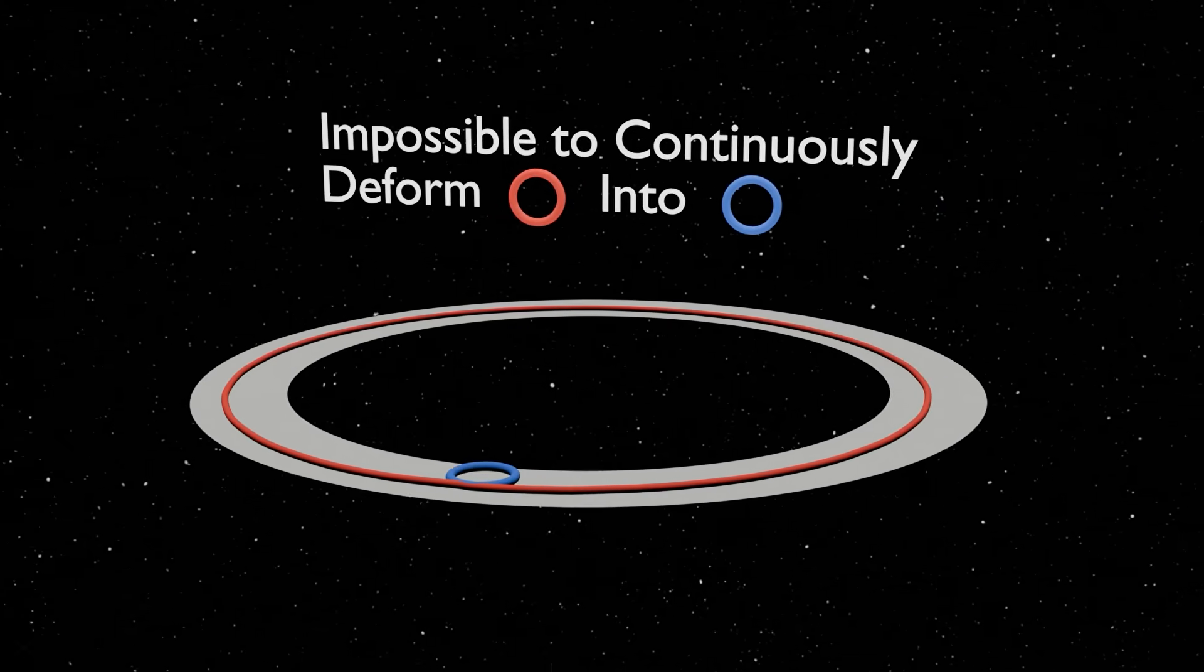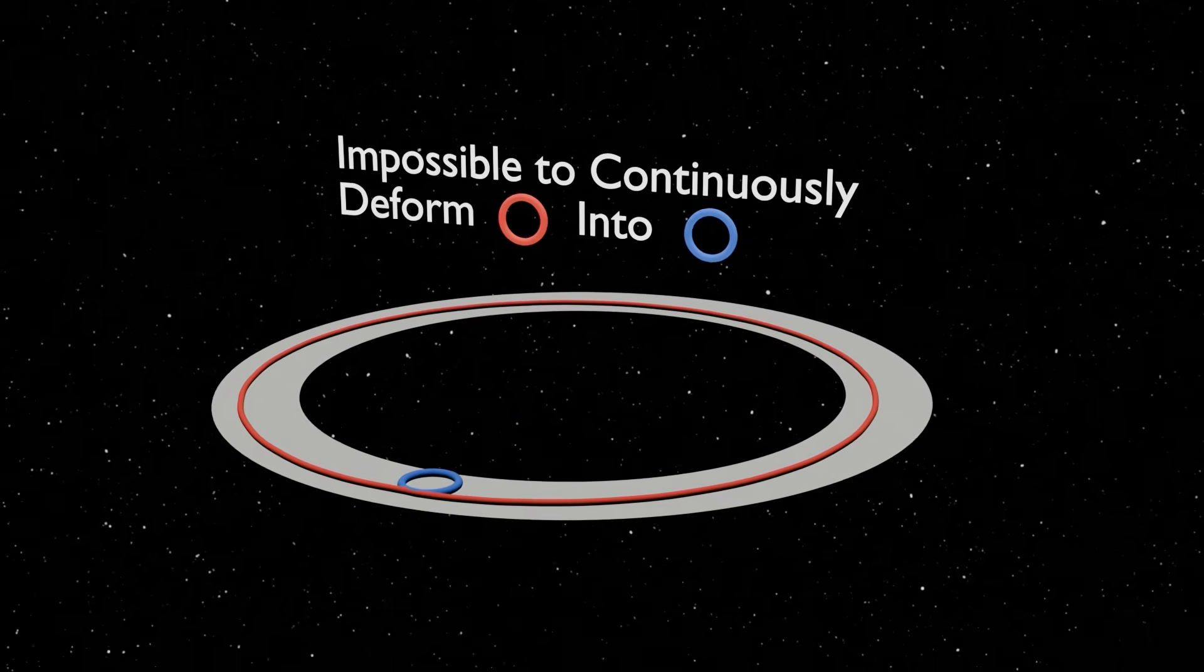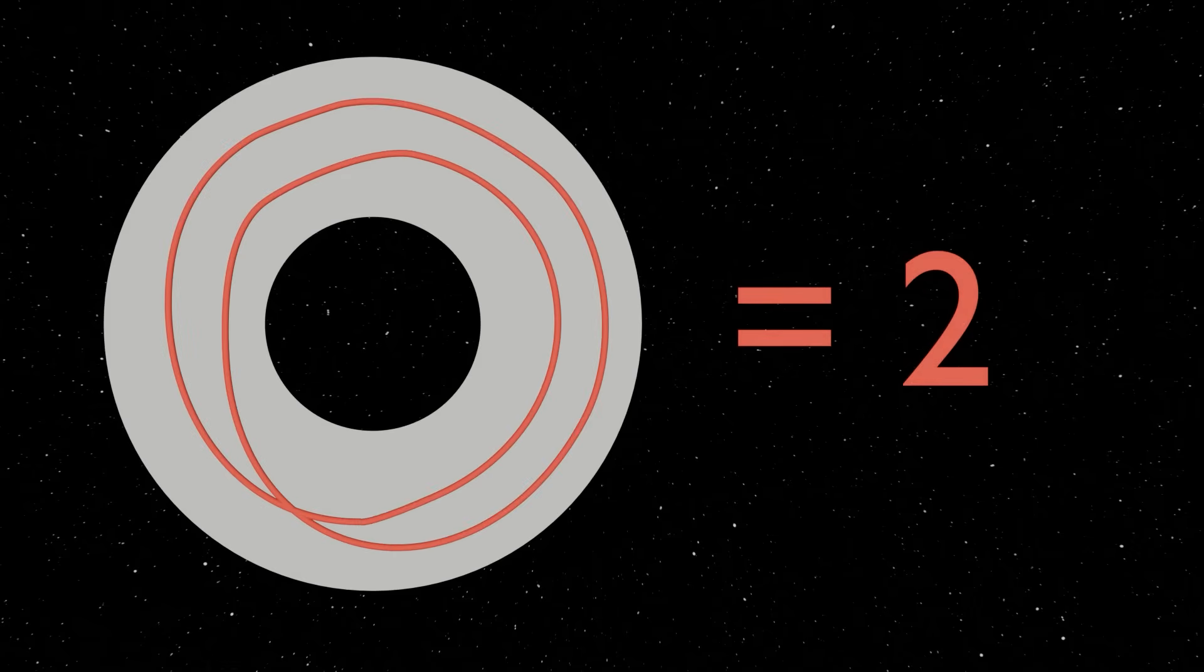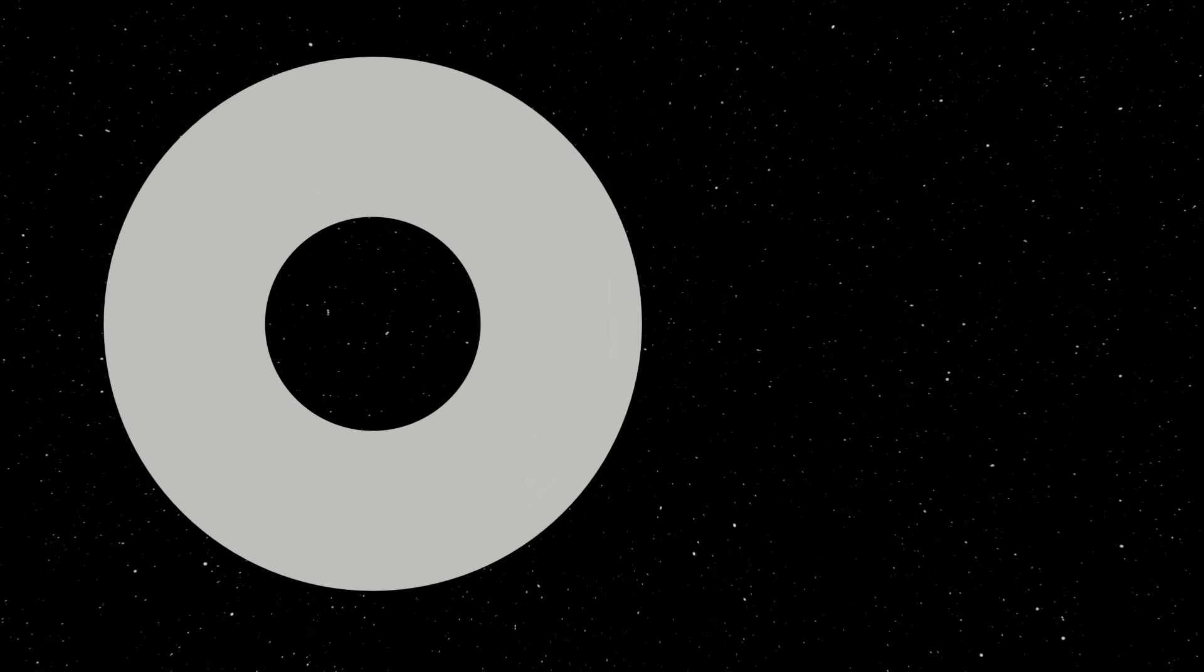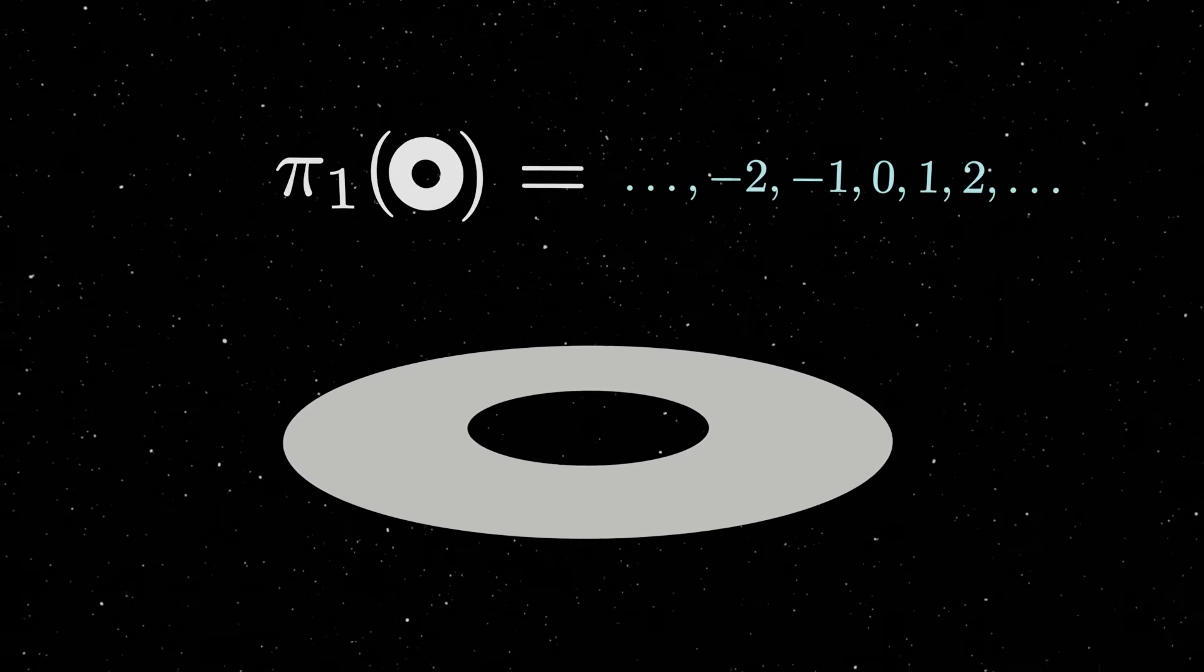Therefore, there is a richer algebraic structure to loops compared to the field circle. In particular, all the possible classes of loops that can't be deformed into each other can be labeled by an integer, which corresponds to how many times the loop drops around the circle and in which direction. So we say that the fundamental group of the circle is the integers, which we denote as Z.